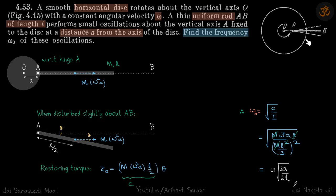We have this horizontal disc on which this rod is hinged about point A. So in equilibrium, with respect to the disc, the rod is straight. This AB does not move with respect to the disc.